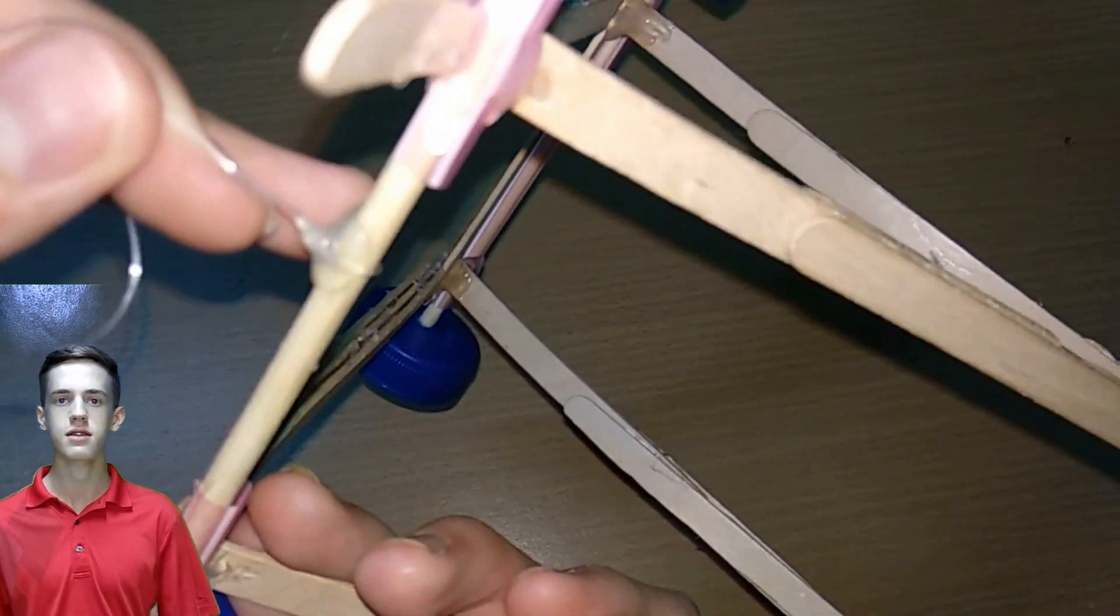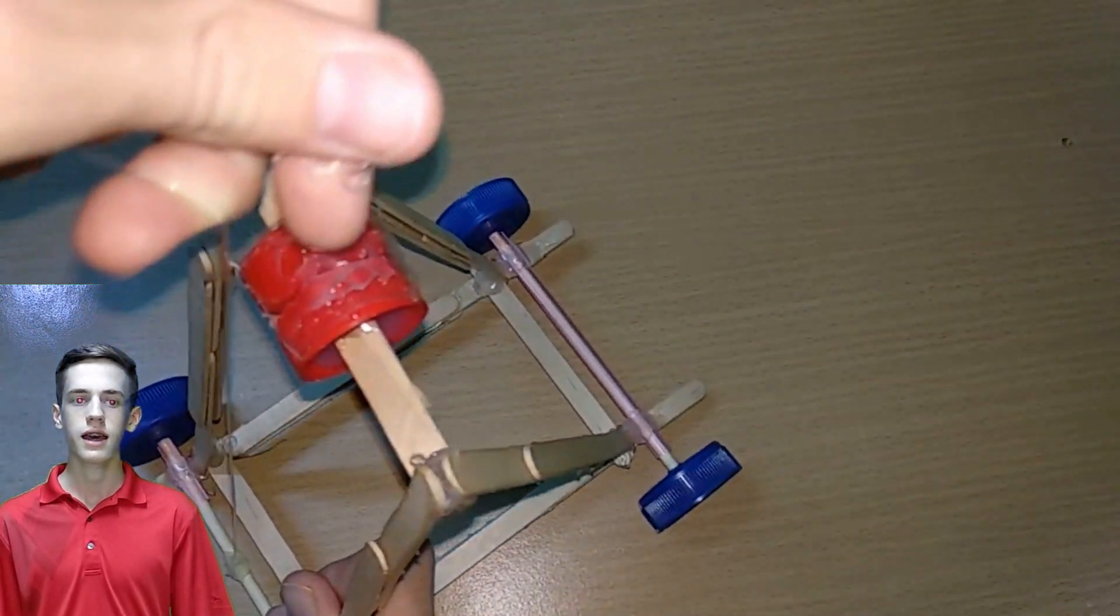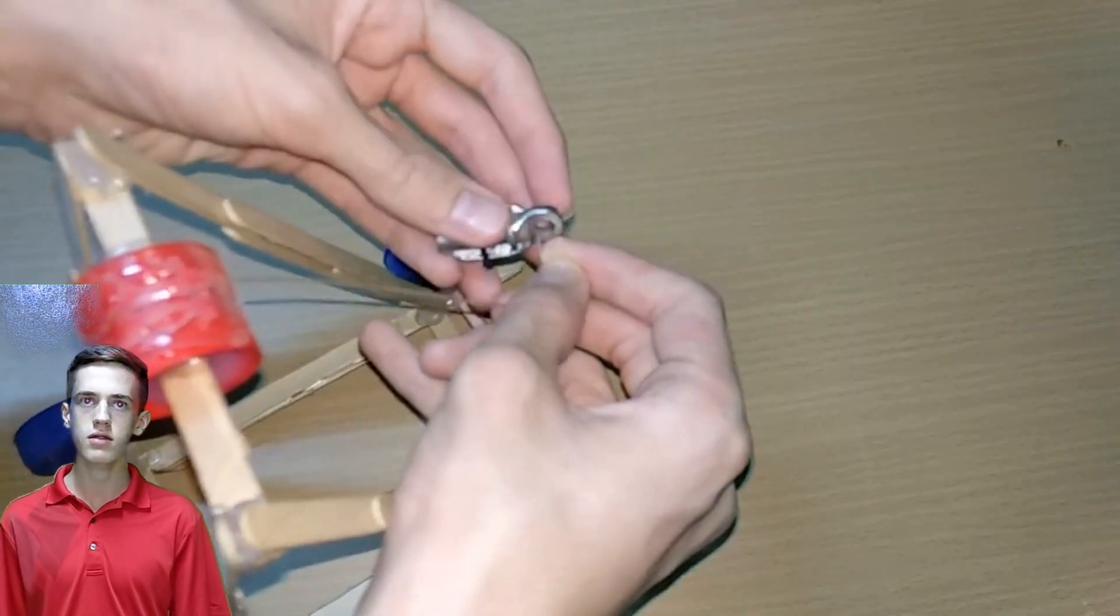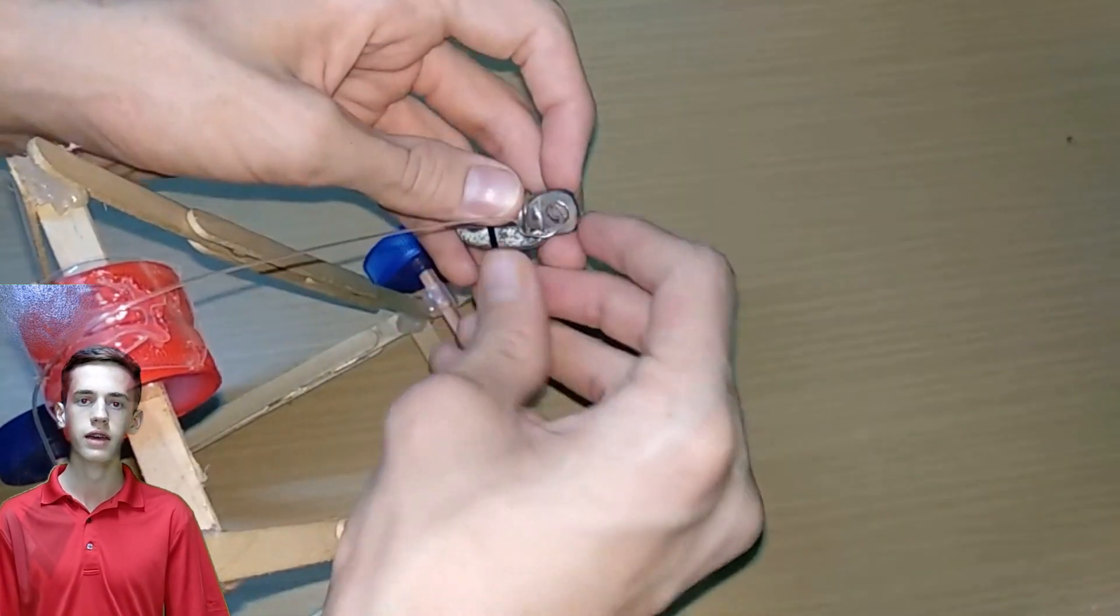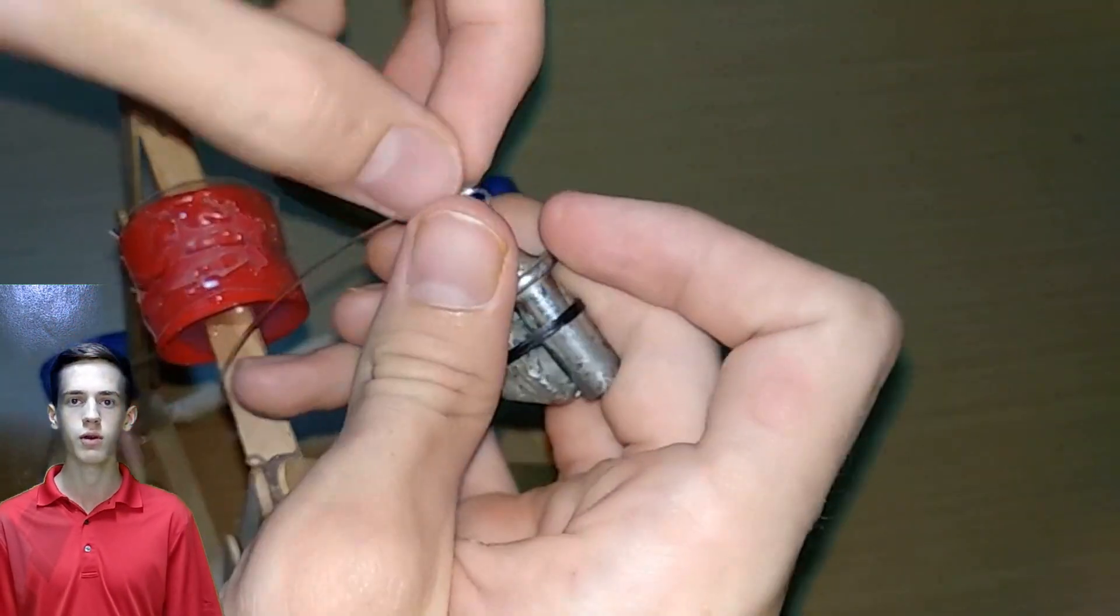The last but most crucial part of the project is to tie and glue one end of the fishing wire onto the back axle. And then wrap it over the triangle so that it lays on top of the two bottle caps. And then tie the other end of the fishing line to a weight.